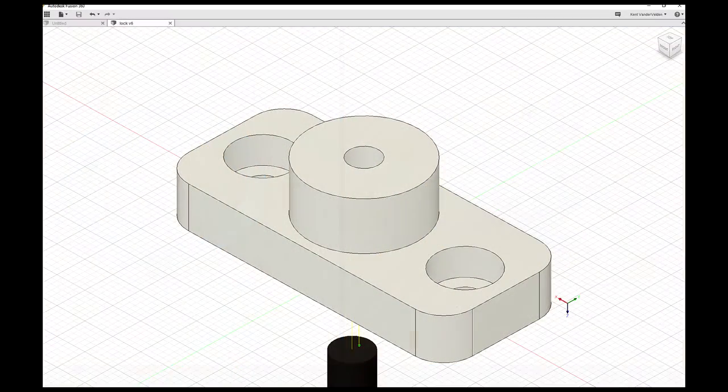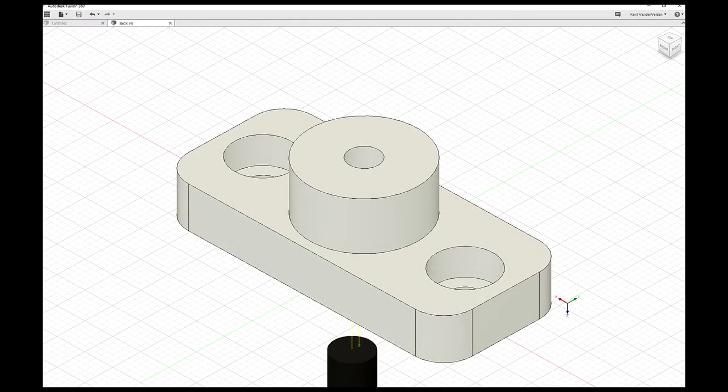After designing in SOLIDWORKS, Fusion 360 was used to produce the CAM files. I made the spindle lock before I was making videos, so unfortunately I don't have much video of the process.